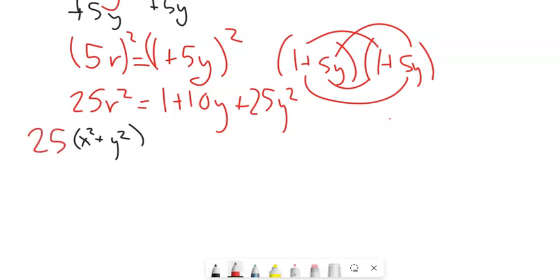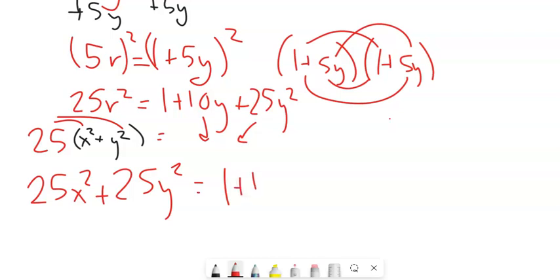Still multiplied by 25. And I'm not going to rewrite it, but I still have this right side over here. Distribute this into here. So now I have 25x squared plus 25y squared equals 1 plus 10y plus 25y squared.